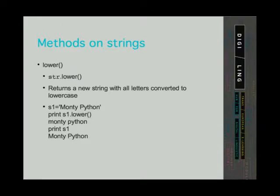The next method we can call on strings is the lower method. As you have probably guessed, it returns a new string with all letters converted to lowercase. The syntax is the same as for the upper method: we state the string, then period, then lower, then open bracket, then close bracket. The program returns a new string where all letters are lowercase. Again, the original string has not changed.